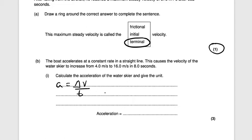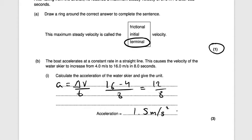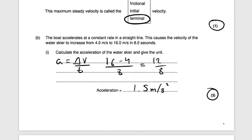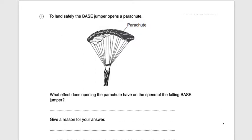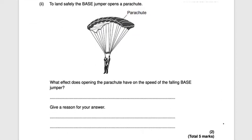The change in velocity is 16 subtract 4, divided by the time of 8 seconds. So that's 12 divided by 8, giving you an answer of 1.5 meters per second squared. Type that into your calculator to check it, and that would be worth three marks.